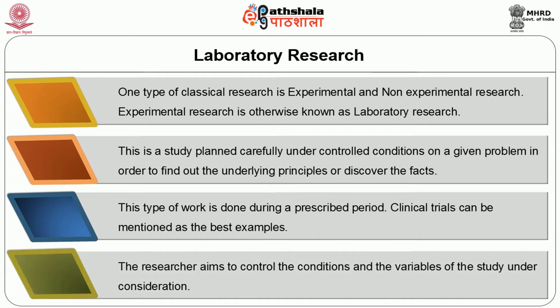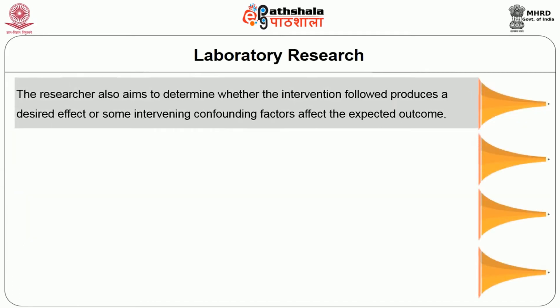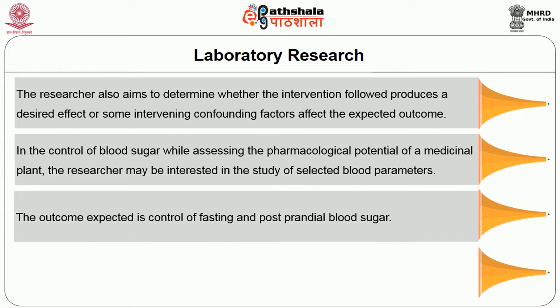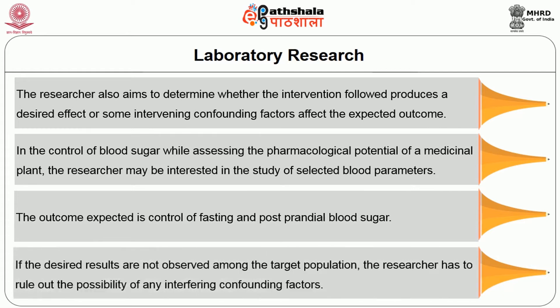The researcher aims to control the conditions and variables of the study under consideration. The researcher also aims to determine whether the intervention followed procedures had a desired effect, or whether some intervening confounding factors affect the expected outcome. In the control of blood sugar while assessing the pharmacological potential of a medicinal plant, the researcher may be interested in selected blood parameters. If the desired results are not observed, the researcher has to rule out any interfering confounding factors.